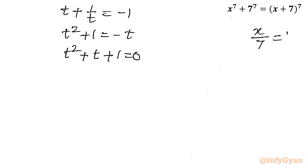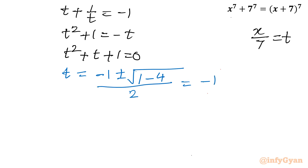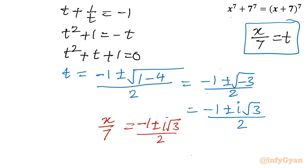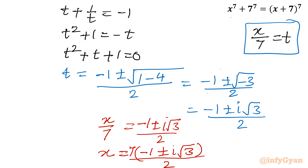Since u = t + 1/t = −1, multiplying by t gives t² + t + 1 = 0. Recall t = x/7. Solving by the quadratic formula: t = (−1 ± √(1−4)) / 2 = (−1 ± i√3) / 2. Therefore x = 7t = 7·(−1 ± i√3)/2. Since u = −1 is a repeated (double) root, this gives 4 complex roots total.